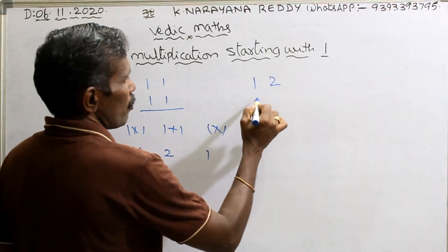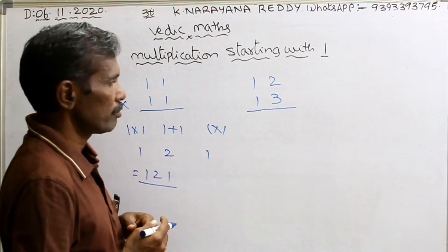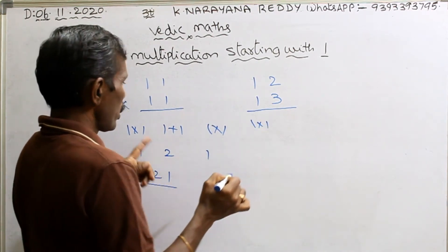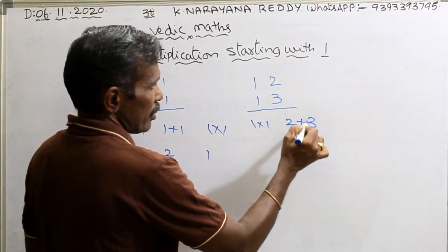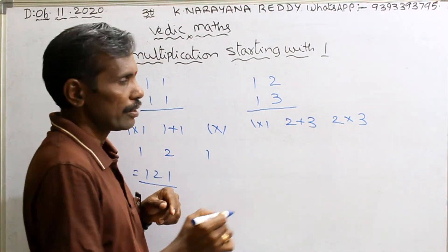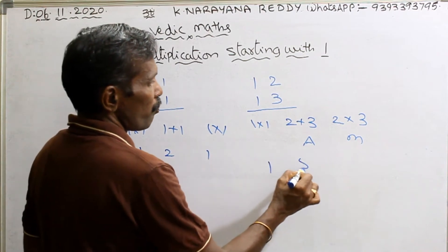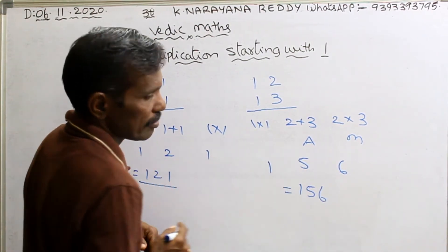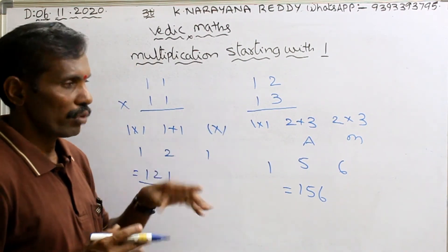Take another number: 12 into 13. Same method. 1 into 1, next addition 2 plus 3, next multiplication 2 into 3. That gives 1, 5, 6. That means the answer is 156. In this way you can determine the answer whenever the number is starting with 1.